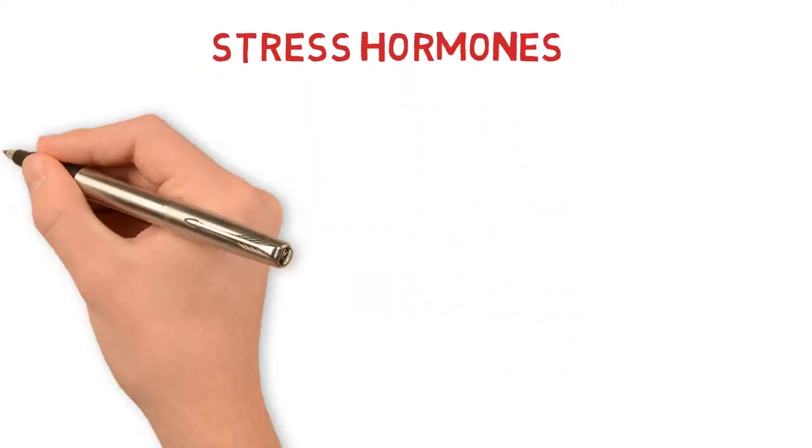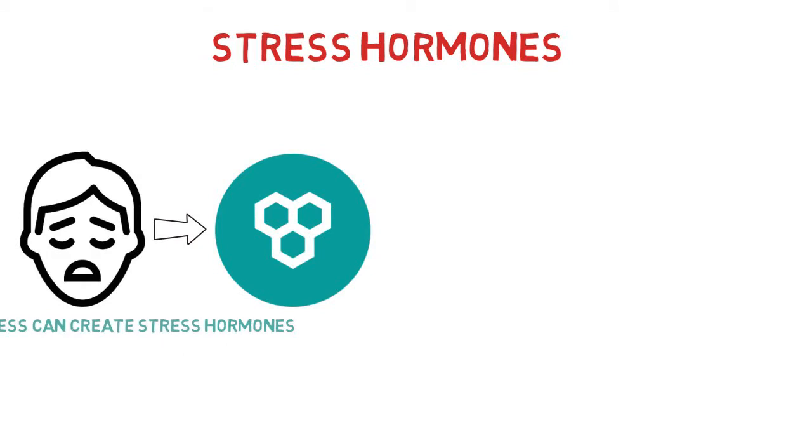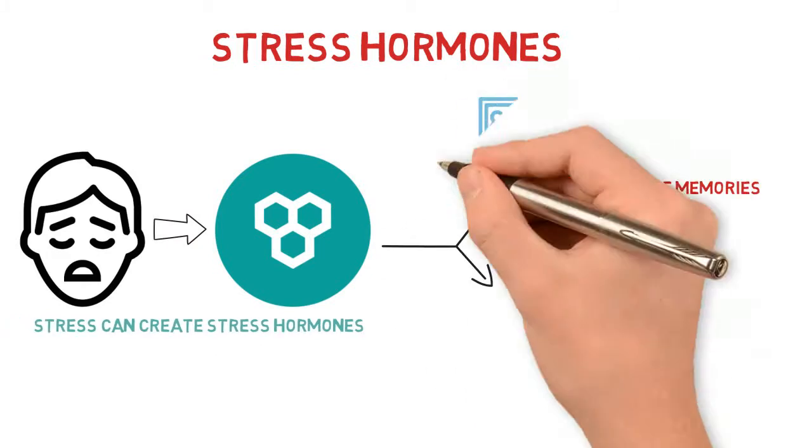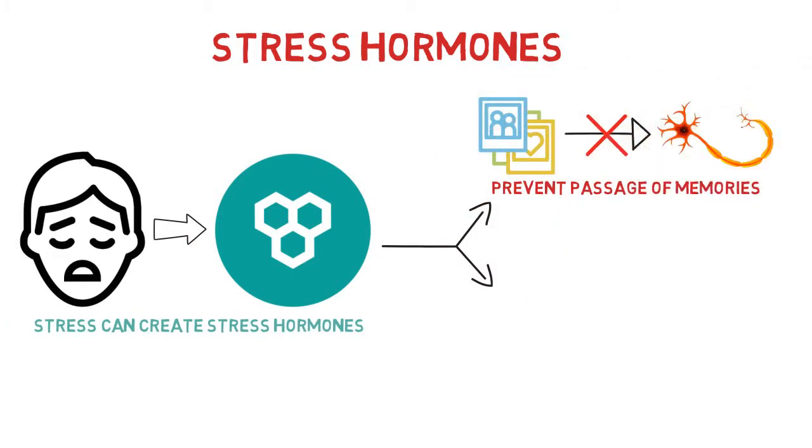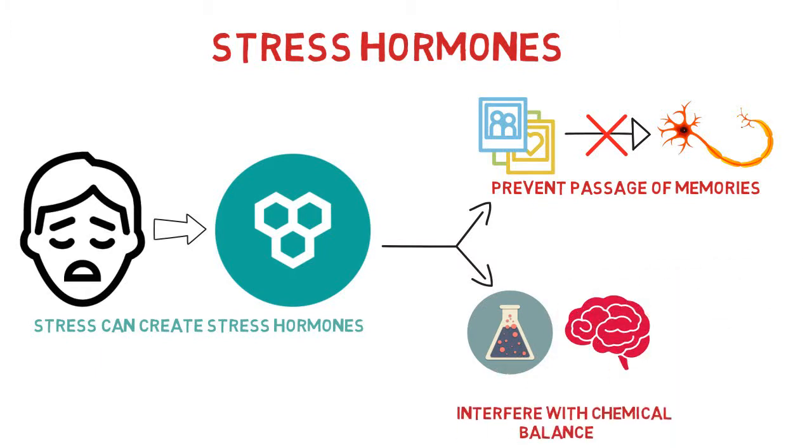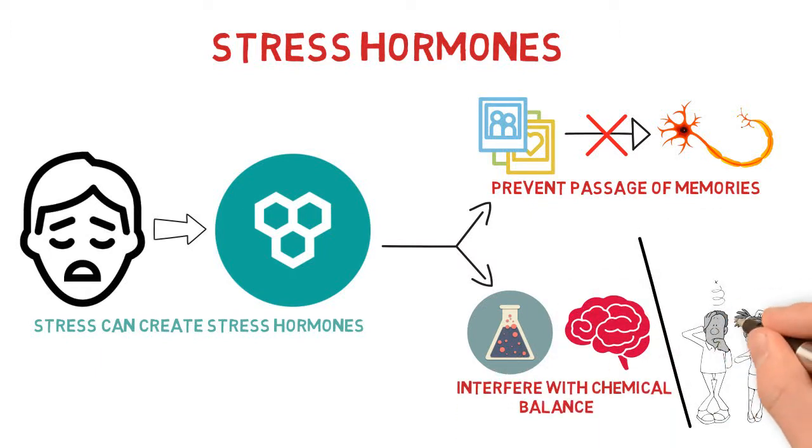Stress hormones. Stress can create stress hormones that may prevent passage of memories through the neural pathways. These hormones interfere with the chemical balance of your brain and can greatly reduce your recall ability.